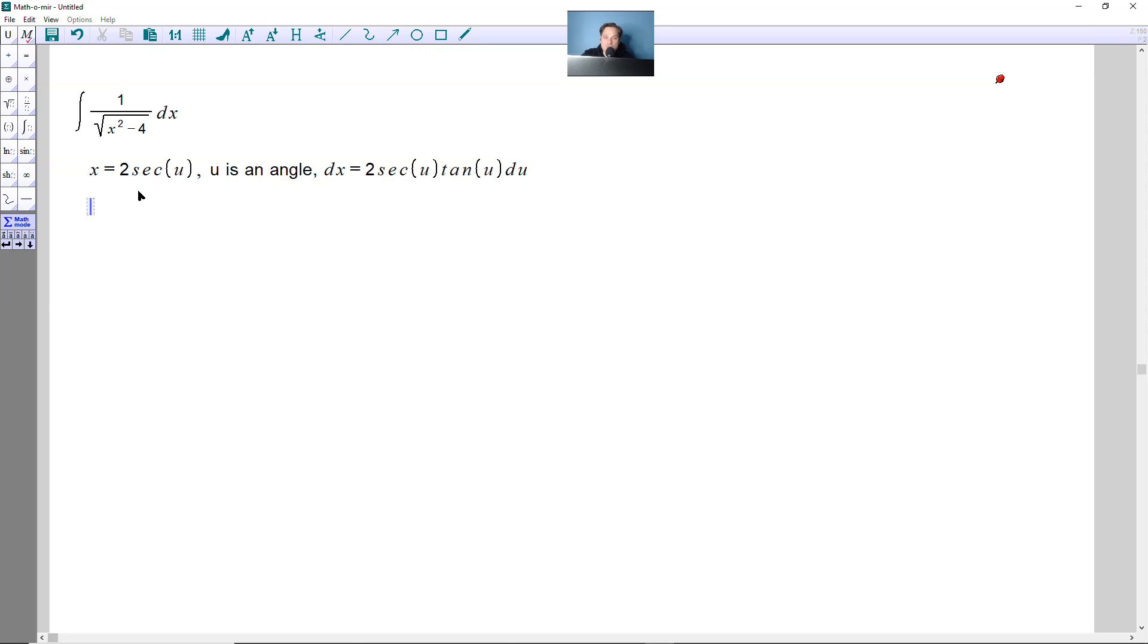Now what we need to do is recreate the expression in the bottom of the integrand as follows. We're going to type square root of, replacing x with 2 secant of u for now, and then here this whole thing is squared and then minus 4. Now we just have to simplify this expression.